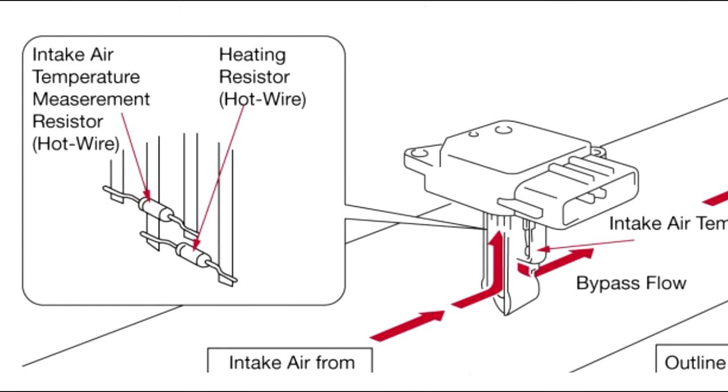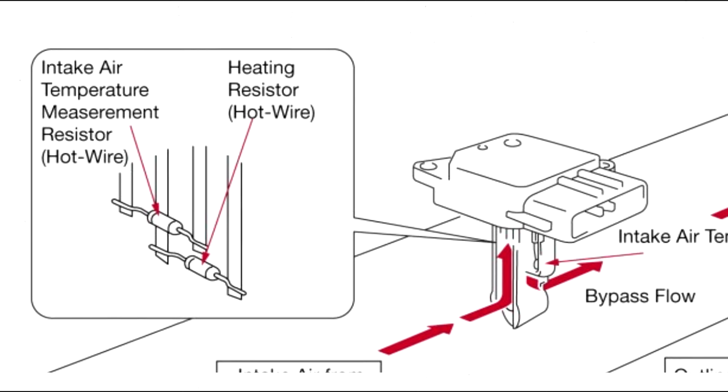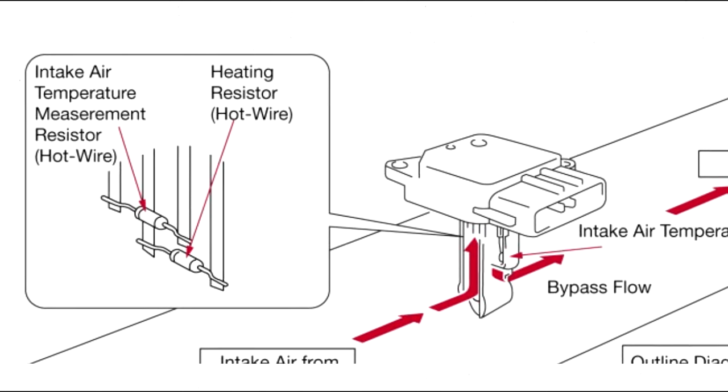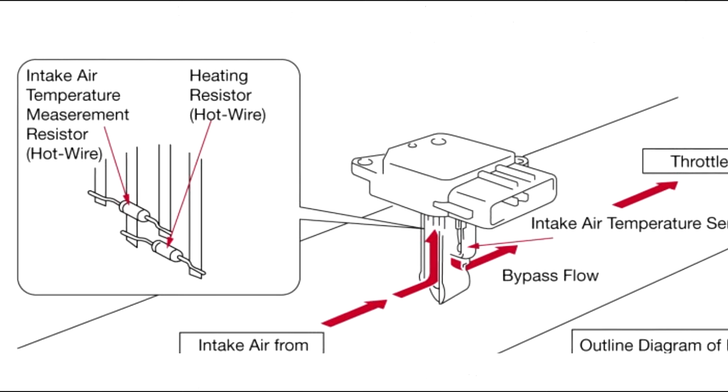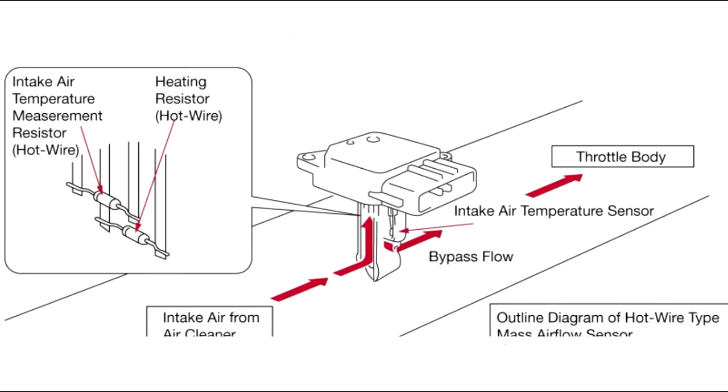The intake air temperature sensor also detects the intake air temperature and outputs it to the electronic control unit. Responding to this signal, the electronic control unit judges the air density and corrects the fuel injection quantity.